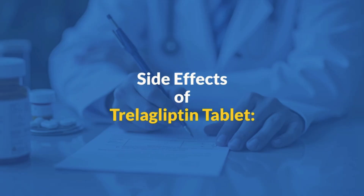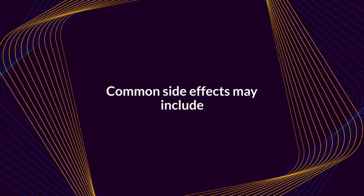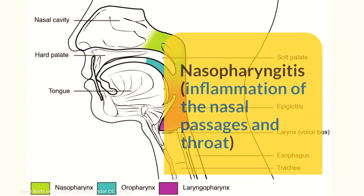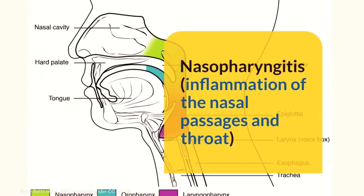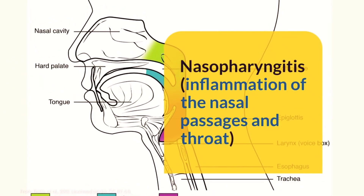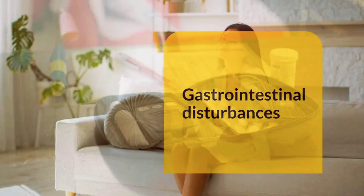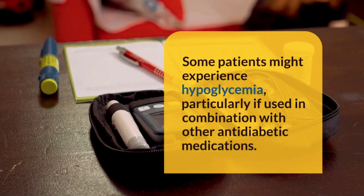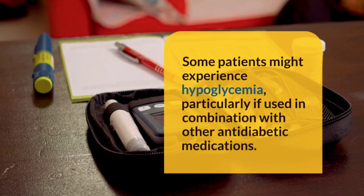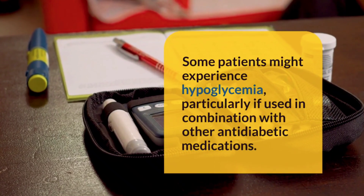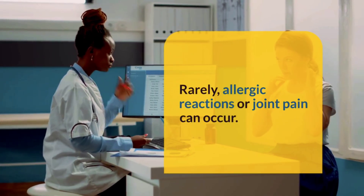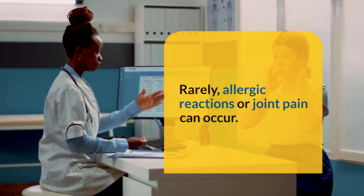Next, let's review the side effects of Treloglyptin tablet. Common side effects may include headache, nasopharyngitis — which is inflammation of the nasal passages and throat — and gastrointestinal disturbances. Some patients might experience hypoglycemia, particularly if used in combination with other anti-diabetic medications. Rarely, allergic reactions or joint pain can occur.